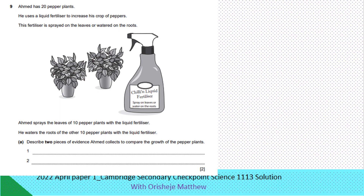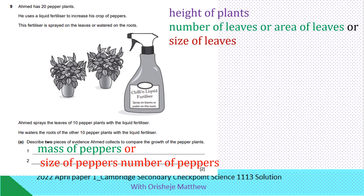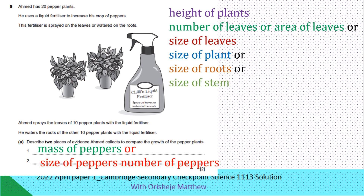Describe two pieces of evidence Ahmed could collect to compare the growth of the pepper plants. The mass of the pepper, the size of pepper, number of peppers, height of pepper plants, number of leaves, area of leaves, or the size of the leaf can be measured, the size of plant, size of root, size of stem.